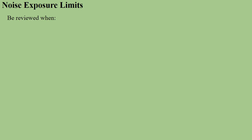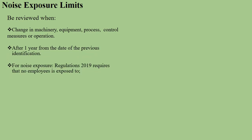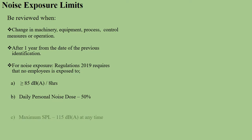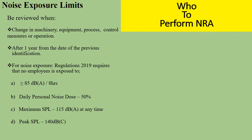Noise exposure limits should be reviewed when there are changes in machinery, equipment, process, control measures, or operation, and after one year from the date of hazard identification, according to the Regulation 2019 requirement. No employee should be exposed to noise greater than or equal to 85 decibels per eight hours. Daily personal noise dose should not exceed 50 percent. Peak sound pressure level should not exceed 150 decibels at any time, and the C-weighted peak sound pressure level should be 140 decibels.